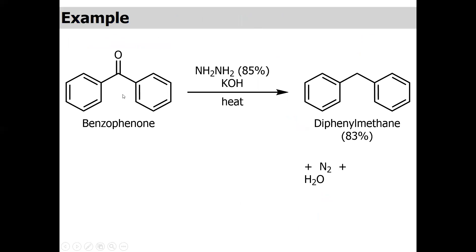As a simple example: benzophenone treated with hydrazine and potassium hydroxide is ultimately converted into diphenylmethane.